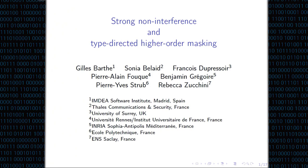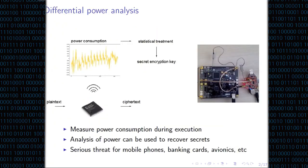This is about applying programming language techniques in order to make crypto implementations more resistant to side channel attacks. In this paper, we're particularly focused on one kind of side channel attack called differential power analysis. Essentially, differential power analysis is a side channel attack whereby you measure the power consumption of your implementation and draw some statistical deductions from the measurements you've made.